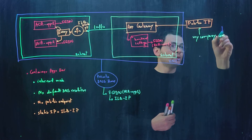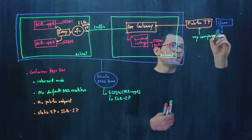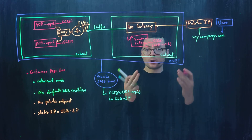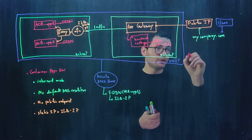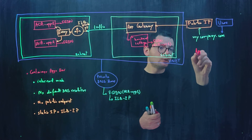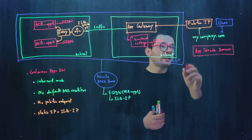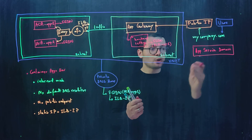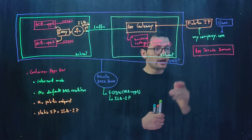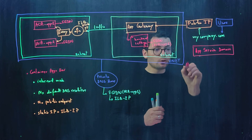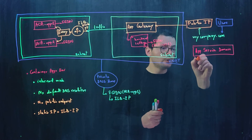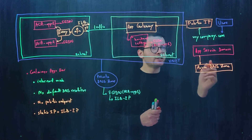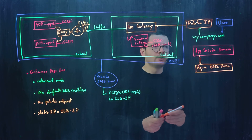To use a custom domain name, you can purchase it outside of Azure or within the Azure subscription using Azure App Service Domain, which allows purchasing .com domain names through a partnership between Azure and GoDaddy. To manage that custom domain name, you can use an Azure public DNS zone to configure subdomains or point to a specific IP address.